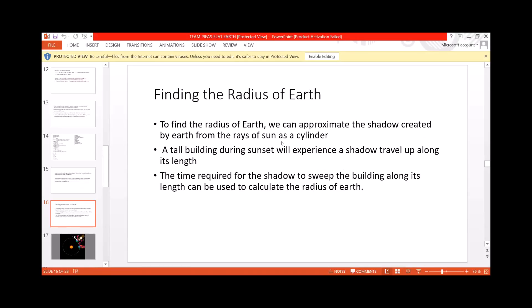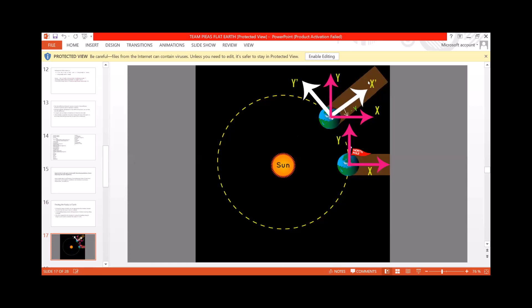Now, since you have agreed that the earth is spherical, let's find what its radius is. We have the procedure here. We are using that during the sunrise or sunset, shadow travel along the height of a building. We have used the time required for the shadow to sweep along the height of a building to calculate the radius of the earth.